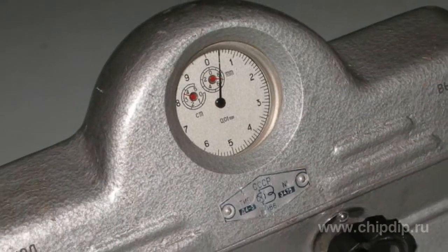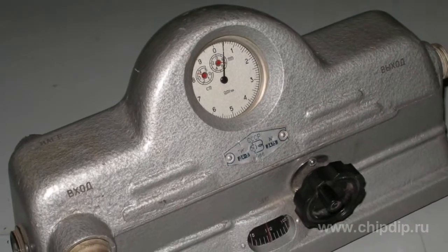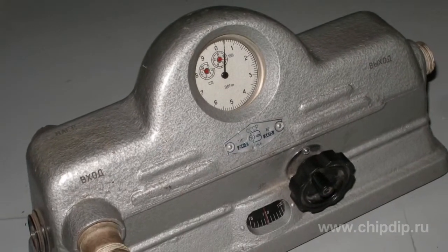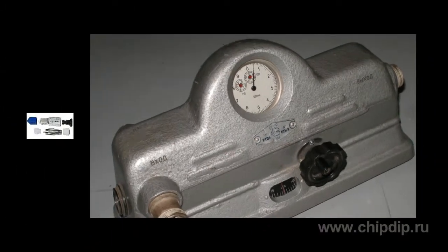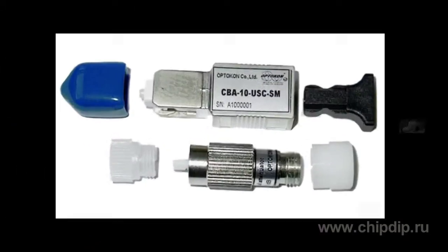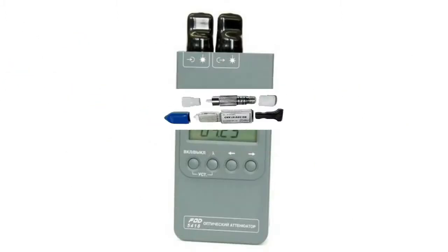Cut-off Attenuators ensure the attenuation of electromagnetic waves in a waveguide at a wavelength exceeding the critical wavelength. Absorbing Attenuators ensure attenuation of electromagnetic waves in absorbent materials, and are used as insulating attenuators in microwave instrumentation.